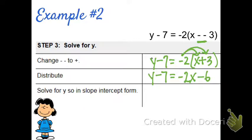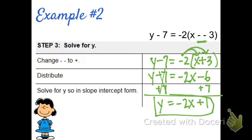Now the very last step, if I want to solve for y, I want that minus 7 to be gone. So I'm going to do the opposite of minus 7, which is to add 7. That cancels out, so I end up with y equals negative 2x, and then negative 6 plus 7 is positive 1. So this now is my equation of the line that goes through those two points.